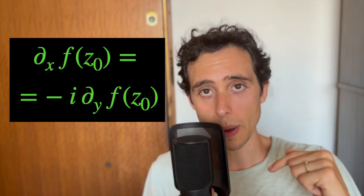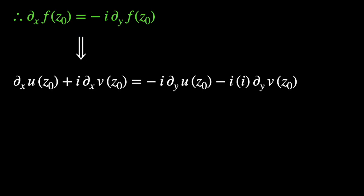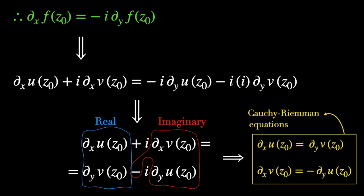Therefore, the partial derivative of f with respect to x at point z zero is the same as minus i times the partial derivative of f with respect to y at point z zero. Combining these two results we get this equality, and opening f into its components u and v, noting the correspondence between real and imaginary parts on both sides, we find this system of equations — exactly what we call the Cauchy-Riemann equations. These relate the partial derivatives of the real and imaginary parts of f in different directions, horizontally and vertically.